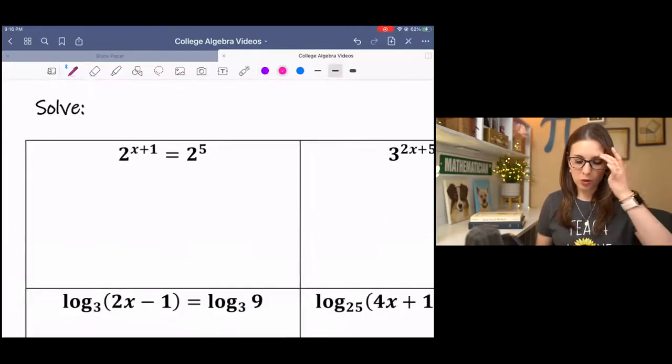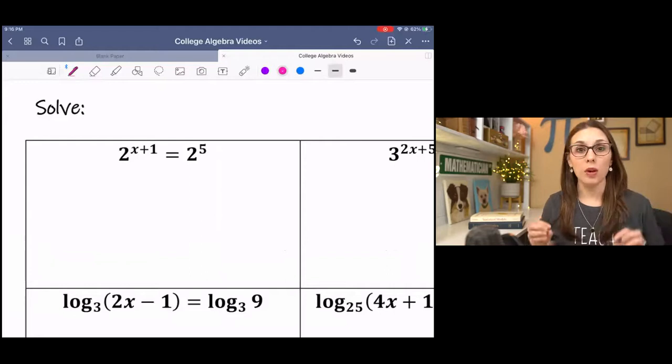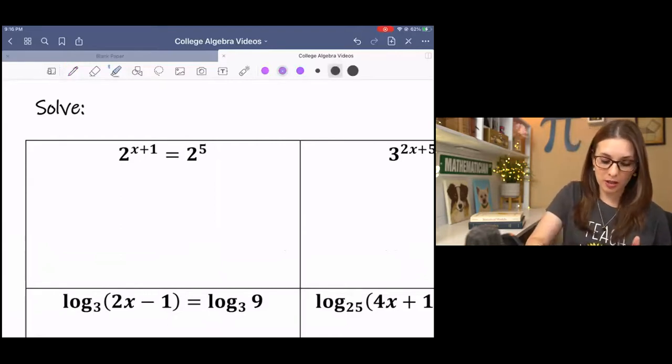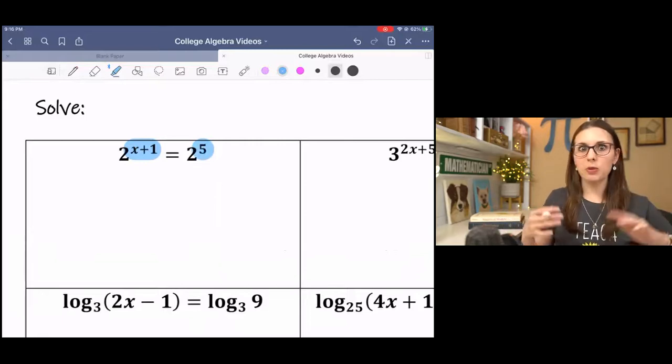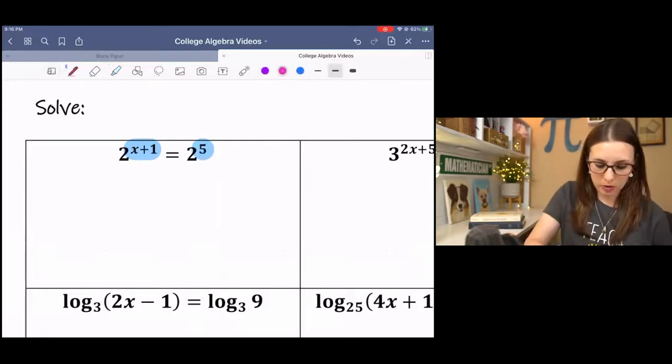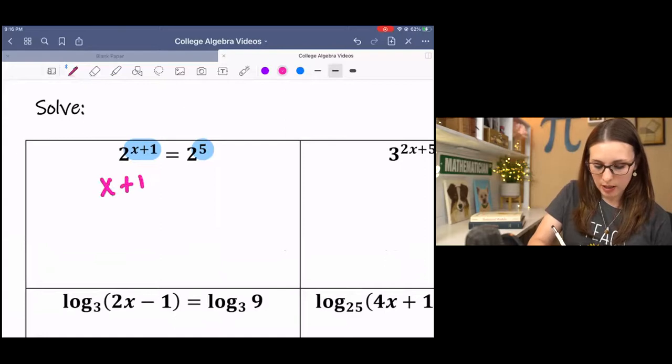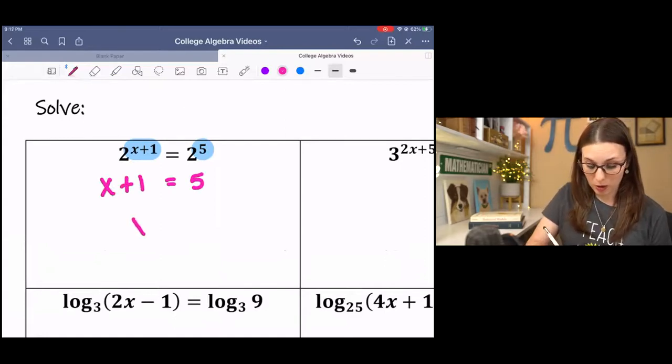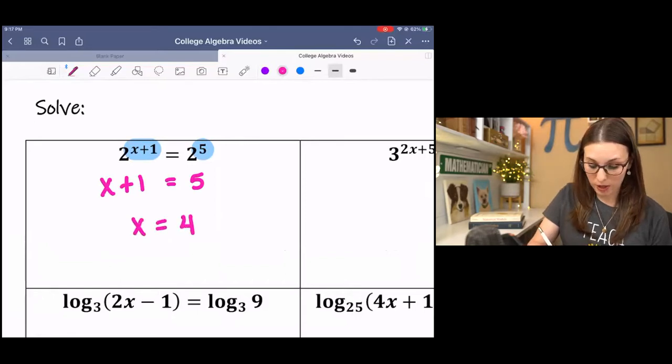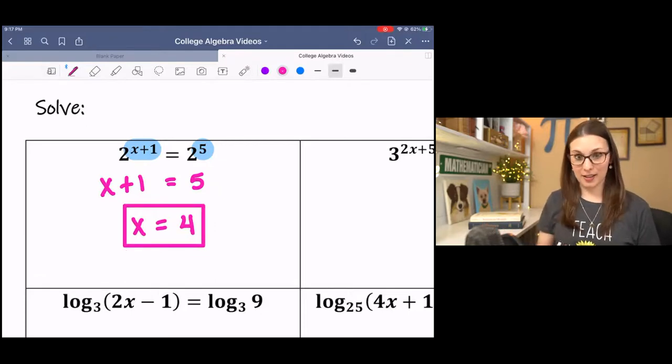When you have exponential or logarithmic equations with the same base, then basically what's happening is you can ignore the base and just pay attention to the exponent. Since the bases are equal, then the exponents have to be equal also. And what we have is x plus 1 equals 5. So all we do is subtract 1 and we get 4. That's all. Can you believe how easy it is?